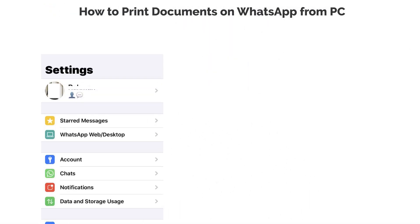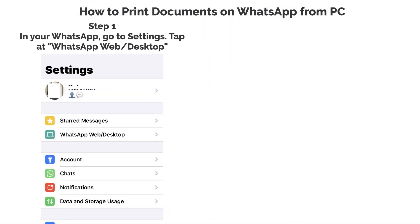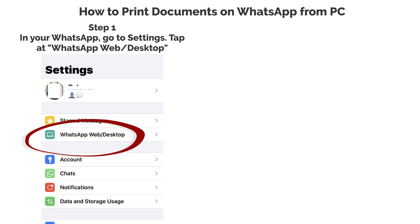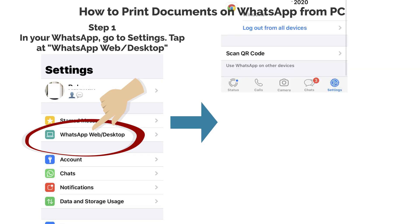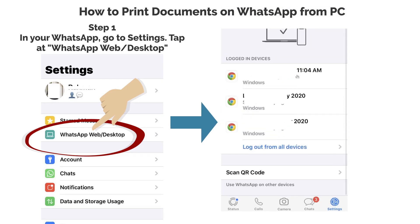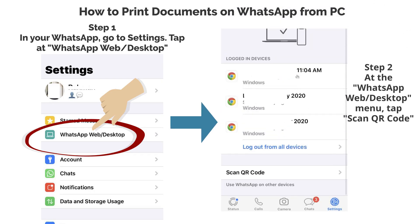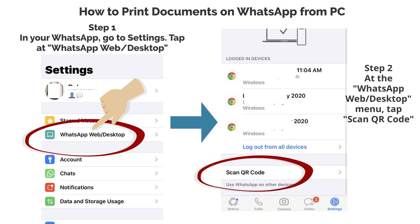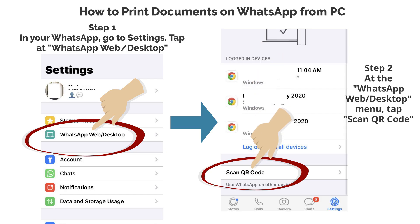Step 1: In your WhatsApp, go to Settings. Tap at WhatsApp Web or Desktop. Step 2: At the WhatsApp Web or Desktop menu, tap Scan QR Code.